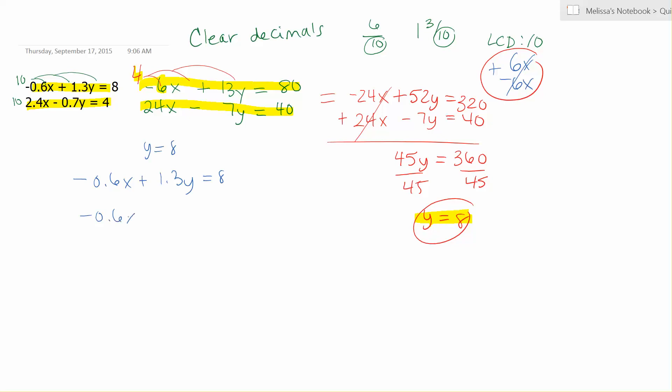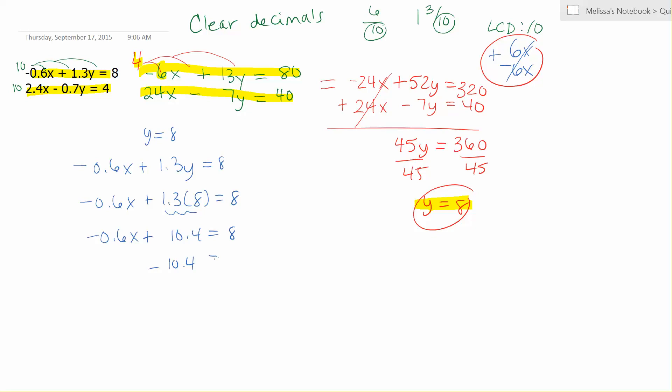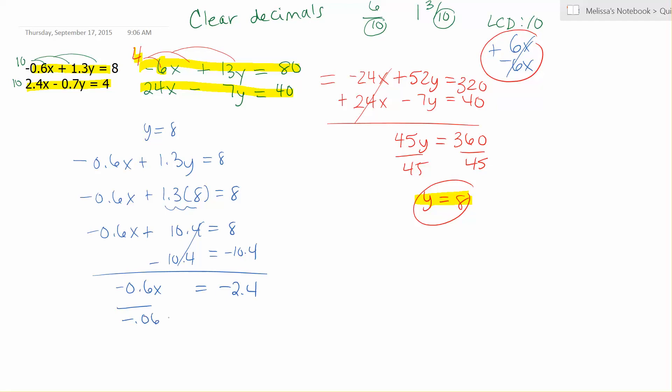So negative 0.6x plus 1.3 times 8 equals 8. Use your calculator to simplify. 1.3 times 8 is 10.4, so negative 0.6x plus 10.4 equals 8. Subtract 10.4 from both sides. Negative 0.6x equals negative 2.4. Divide by negative 0.6 to get x. So x equals negative 2.4 divided by negative 0.6, which is 4.